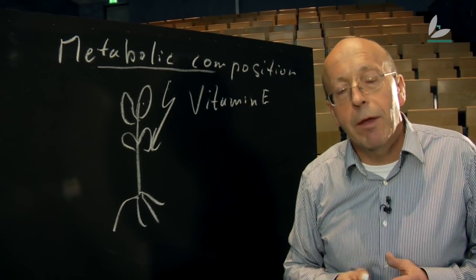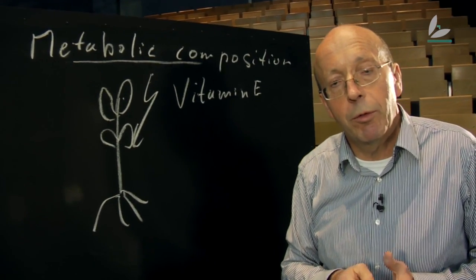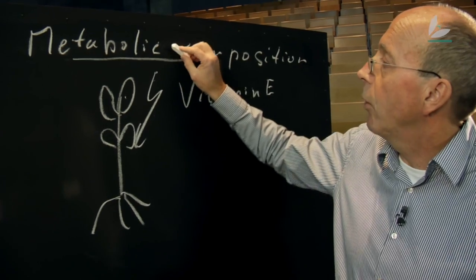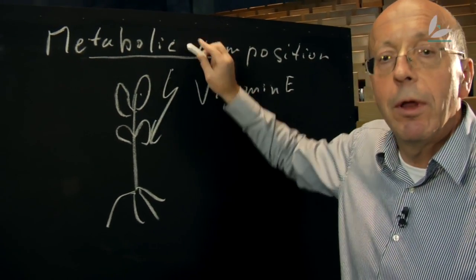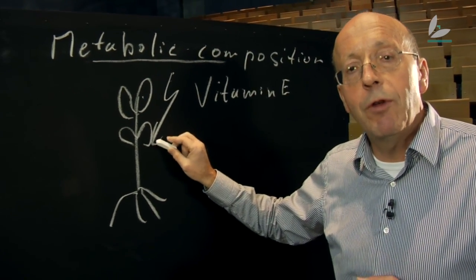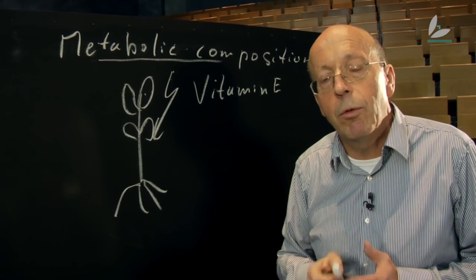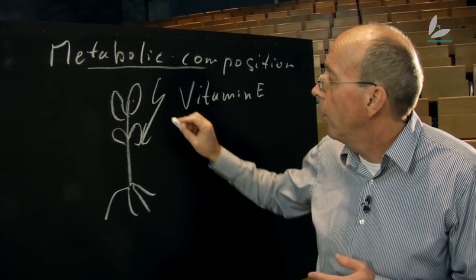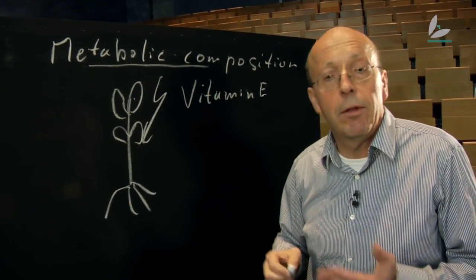Again, this is regulated by genes which are important for the metabolic composition. And again, understanding what happens on the metabolic composition level in connection with what genes are important allows to develop new strategies to improve plants with respect to their resistance against drought stress.